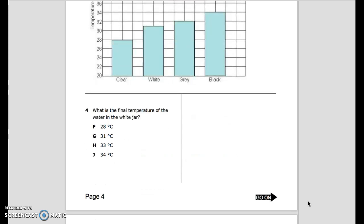Question number 4: What is the final temperature of the water in the white jar? F. 28 degrees Celsius. G. 31 degrees Celsius. H. 33 degrees Celsius. J. 34 degrees Celsius.